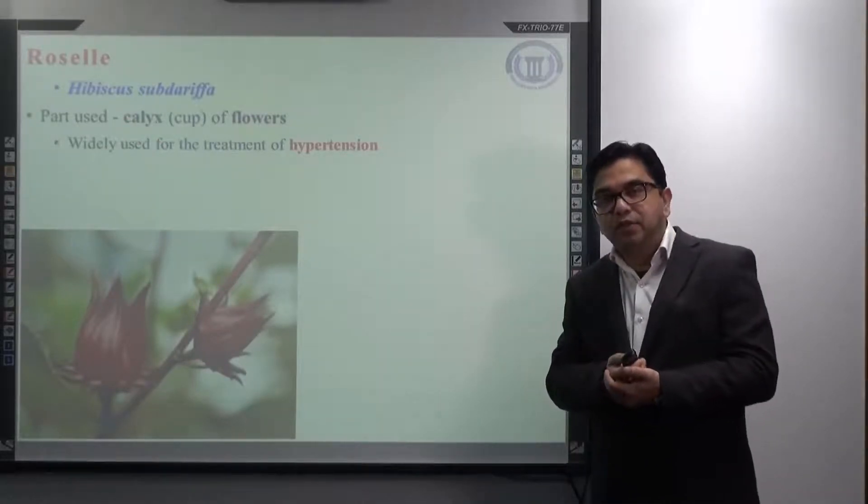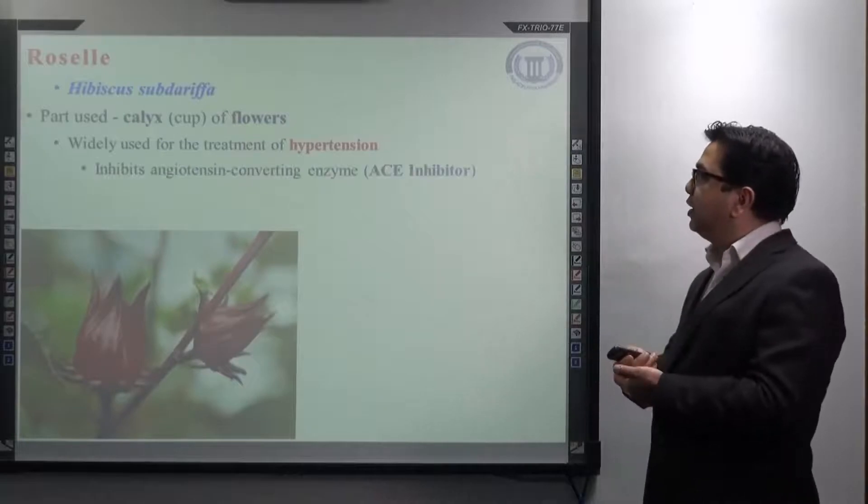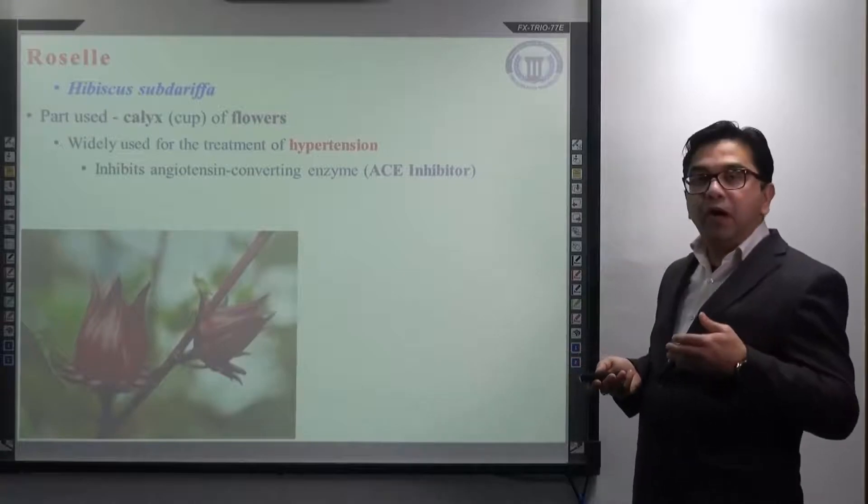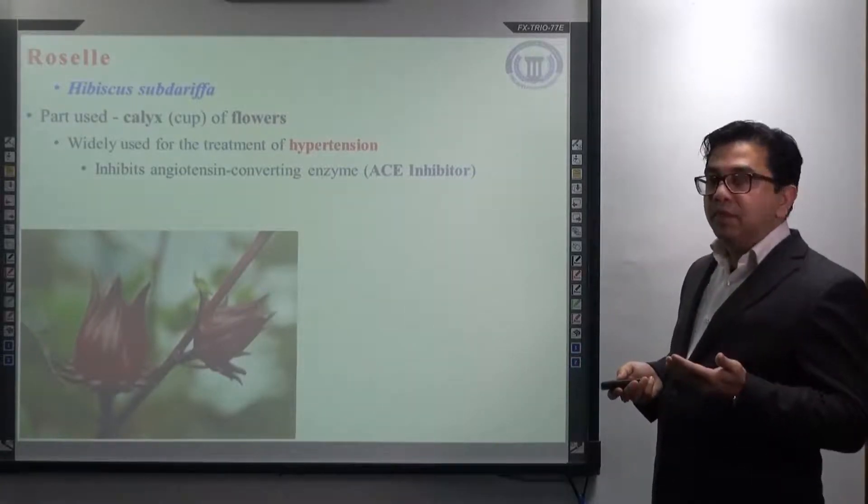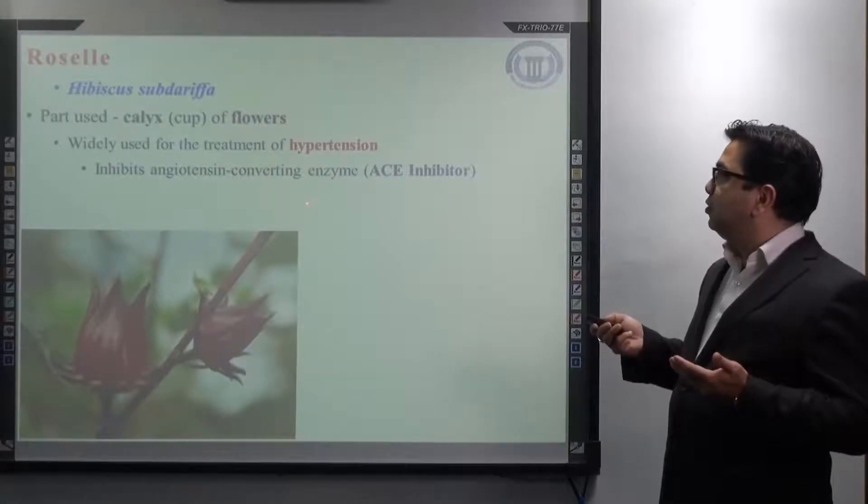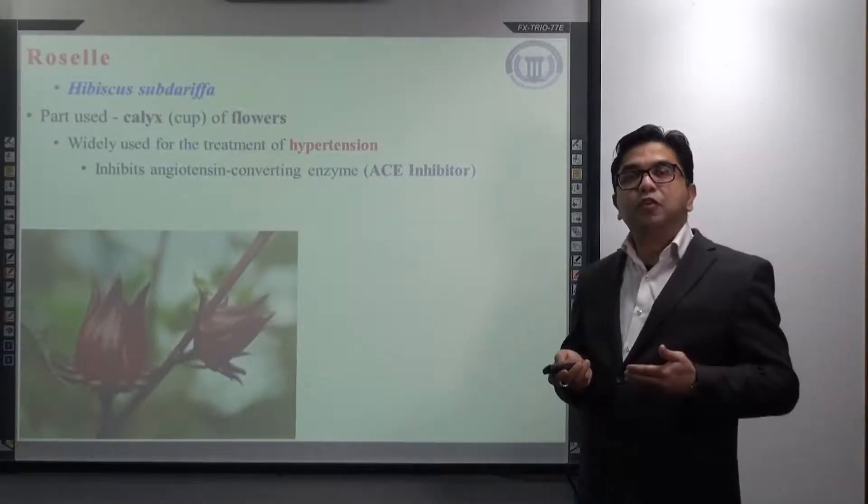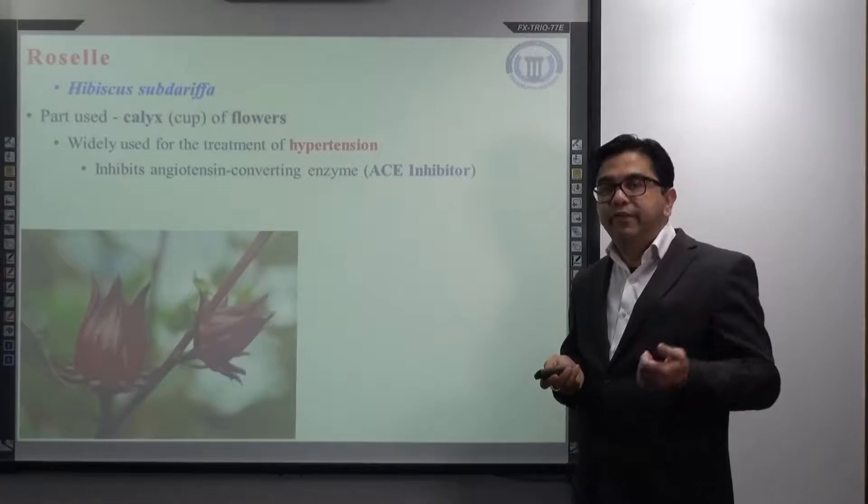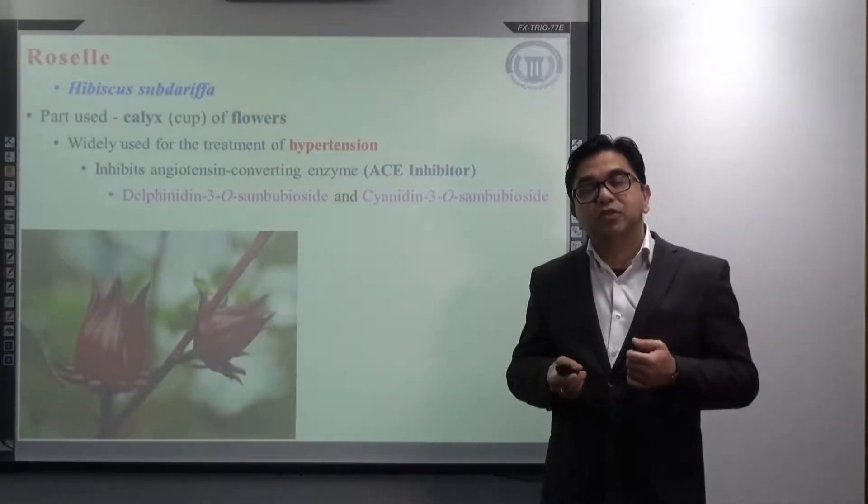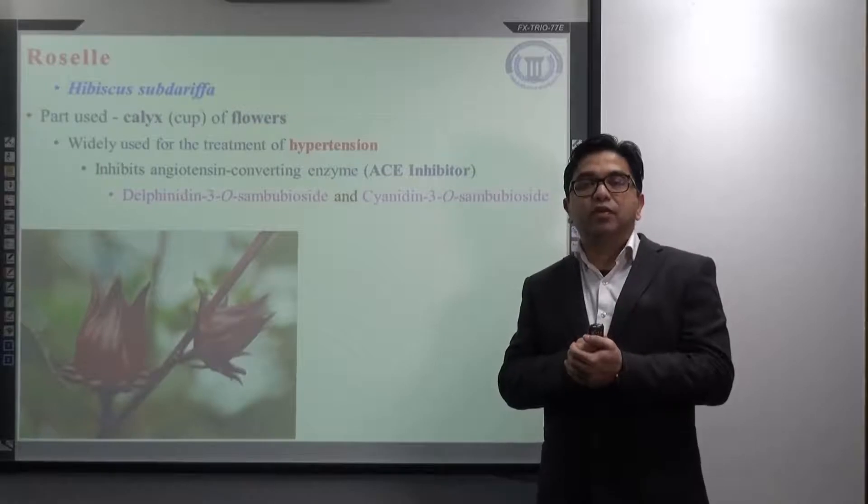Here, the mechanism is established. How is it useful for the treatment of hypertension? It is mainly by inhibiting an enzyme, that is the angiotensin converting enzyme. It is an example of strong ACE inhibitor. When you talk about the chemical constituent which is responsible for the inhibition of ACE, mainly two anthocyanins.